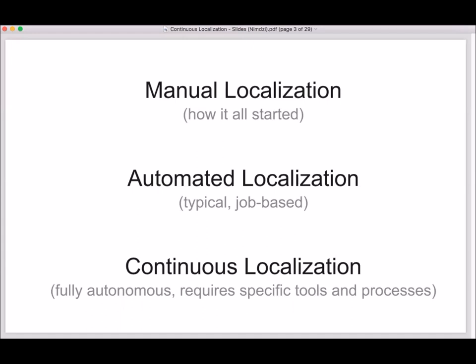We will be talking about three different stages of automation or different approaches to localization. First, we will briefly talk about manual localization to have a baseline for comparison. Then we will talk about automated localization the way it is typically implemented and offered by TMS solutions — about APIs and how not every automation is actually a good one. And then we will talk about continuous localization in depth, explaining how it differs and what tools you can use to achieve it. Okay, let's start with manual localization first.